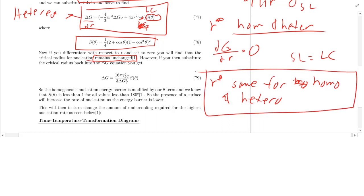Now, what really changes here is once you plug it back in to the delta G equation. So you'll notice, once you plug in back R star into your expression, this looks the same as our previous expression, but with one critical difference. Look at this factor here. The S theta factor is going to be less than one for all values less than 180 degrees.